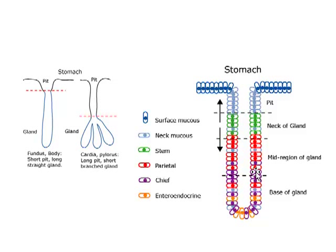The function of oxyntic or parietal cells is to secrete stomach acid, while chief or zymogenic cells secrete enzymes which become active in the acid environment of the stomach. Finally, down toward the base of the gland, we find a small population of enteroendocrine or diffuse neuroendocrine cells, part of a distributed system of endocrine cells found throughout the gut mucosa. Their function is to release hormones that act locally and at a distance to regulate the behavior of both the mucosa and muscular components of the gut, as well as associated glands.